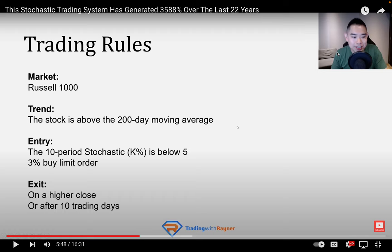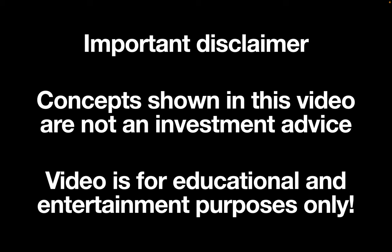Hello and welcome. In this video we are going to backtest the stochastic trading system presented by Reyna. These are the trading rules, so let's go over them together. I recommend checking out Reyna's video beforehand — I'll link it in the description. We are trading stocks in the Russell 1K; the stock should trade above its 200-day moving average, the 10-period stochastic K line should be below 5, and when both conditions are met we place a 3% buy limit order. We exit on a higher close or after 10 trading days. Sounds easy, but it's quite a challenge in Python — that's what this video is about.